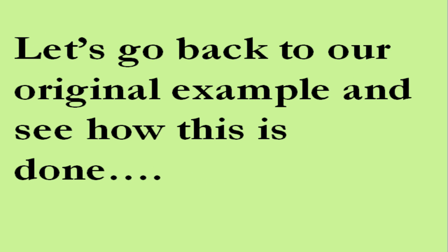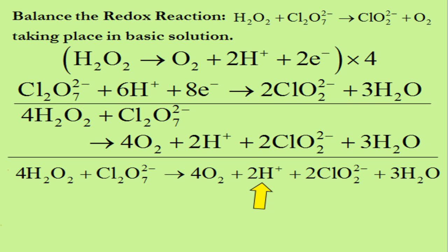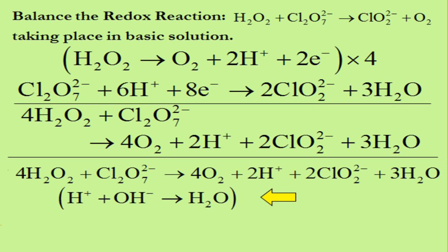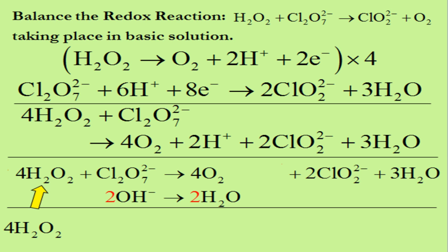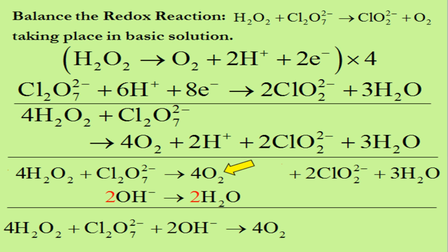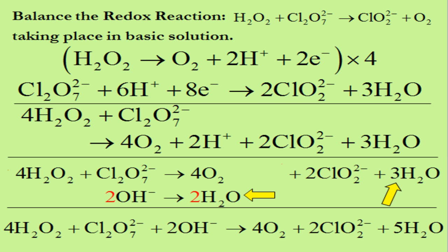Let's go back to our original example. We have two H⁺ ions on the right side of our acidic equation that we must cancel. So we add the equation H⁺ + OH⁻ → H₂O, multiplied by two: 2H⁺ + 2OH⁻ → 2H₂O. We cancel out the two H⁺ ions. Drawing a line and adding everything up: on the left we have 4H₂O₂ plus Cl₂O₇²⁻ plus 2OH⁻, which gives products 4O₂ plus 2ClO₂²⁻ plus two plus three H₂O, which is 5H₂O.